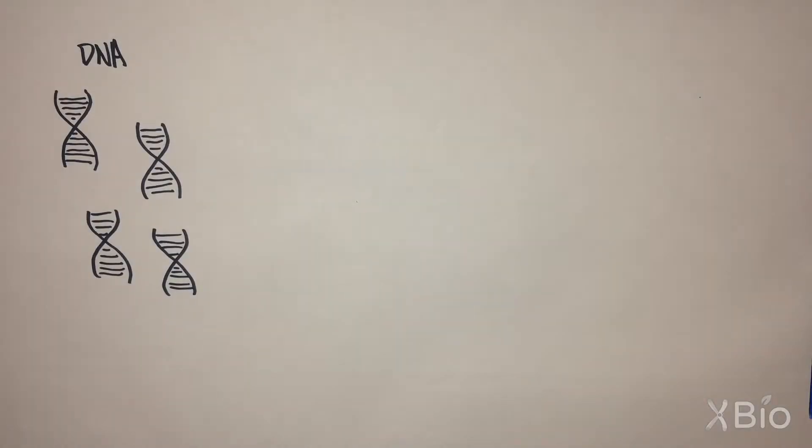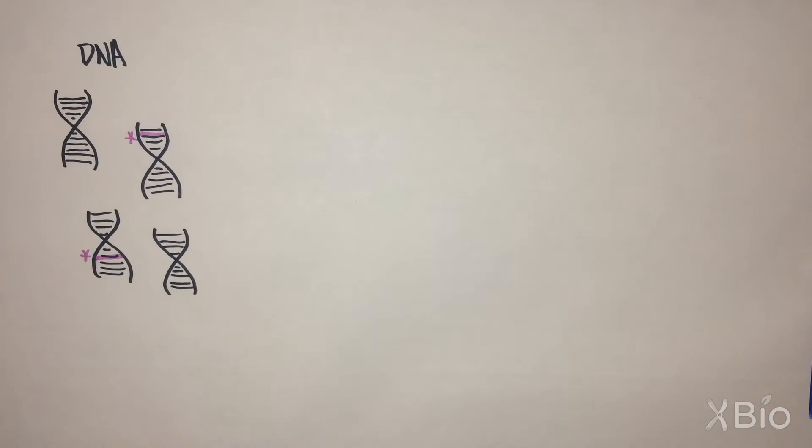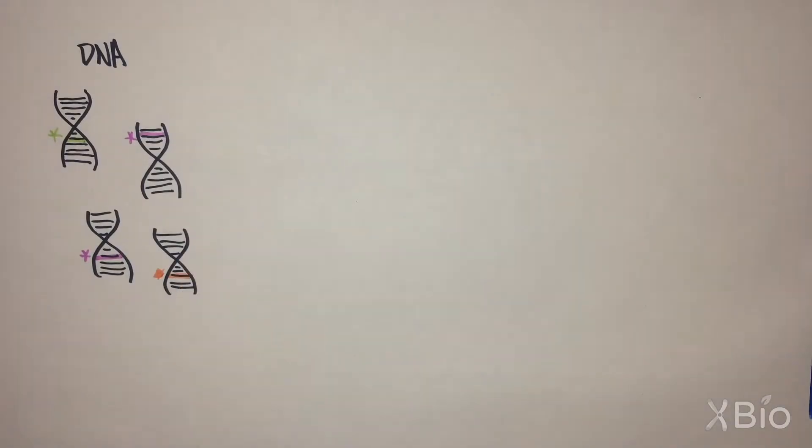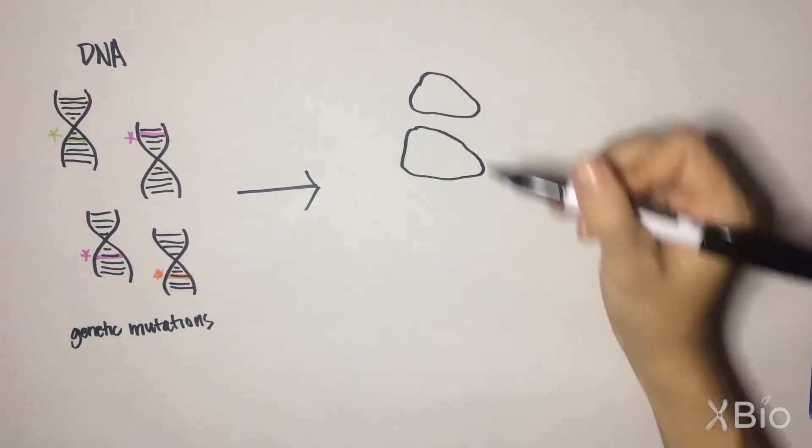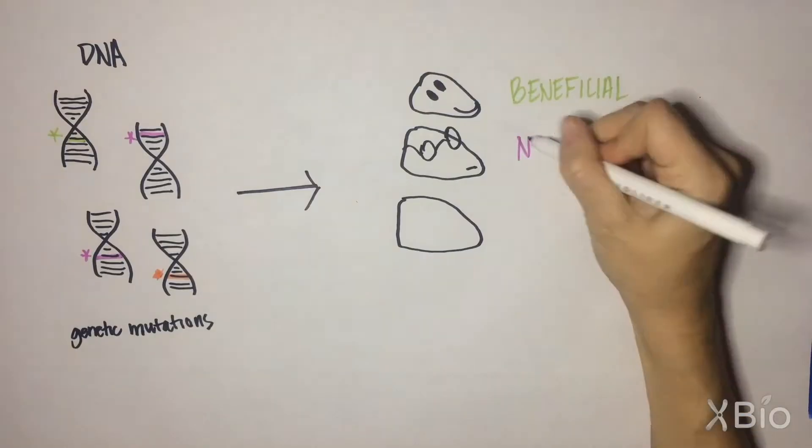First, random genetic mutations in DNA create diversity in the shapes and properties of eyes. These variations may be beneficial, neutral, or detrimental. The beneficial ones are key.